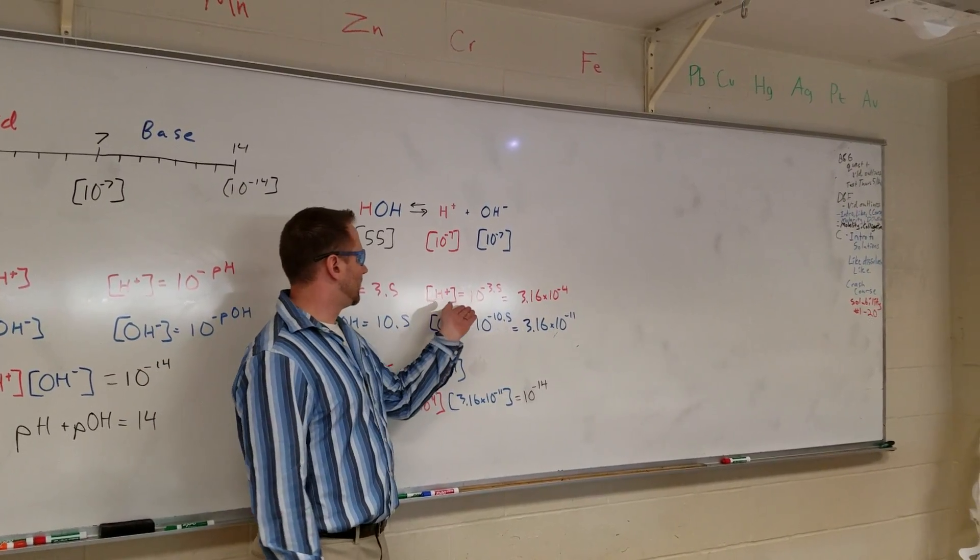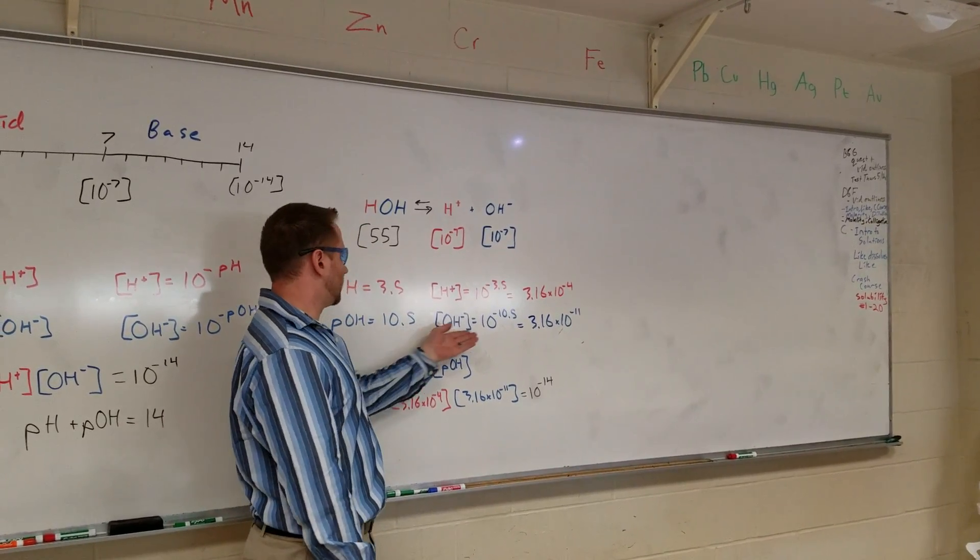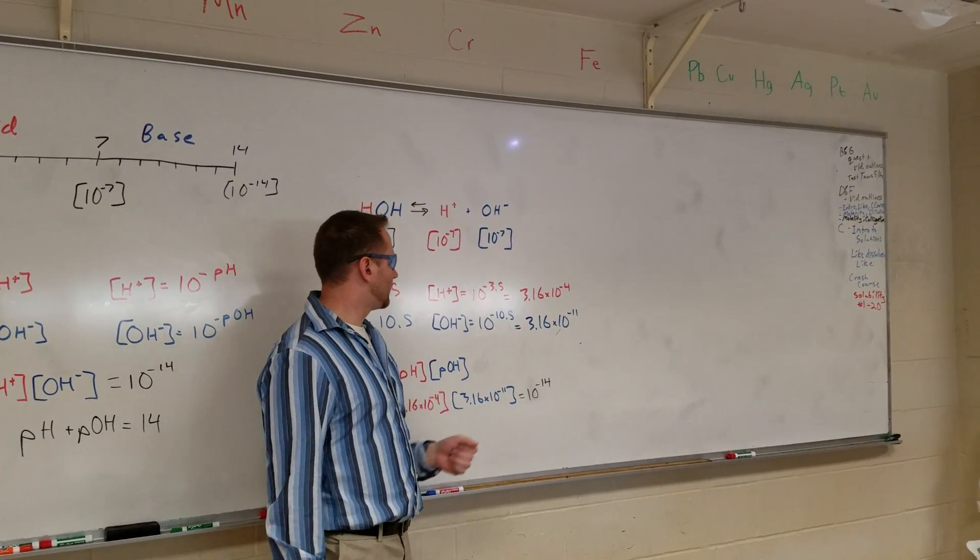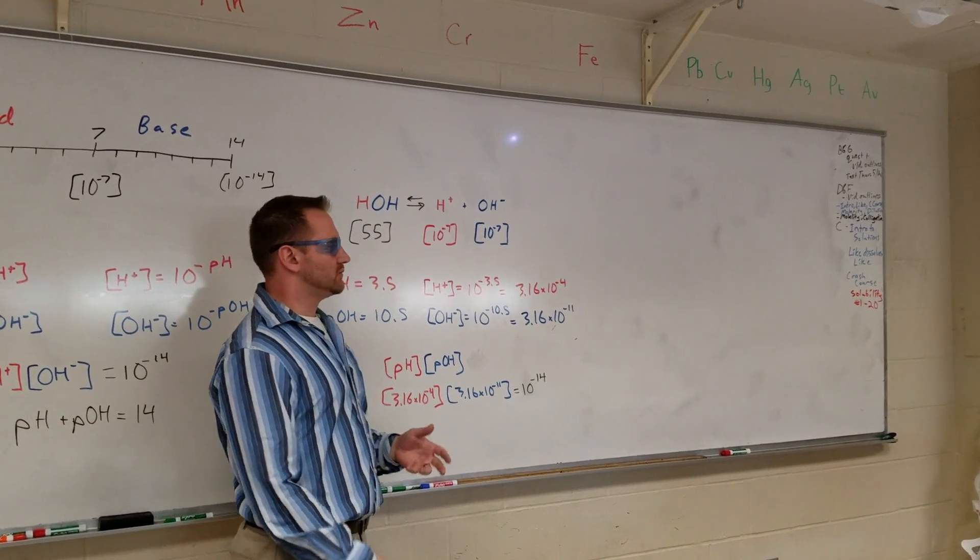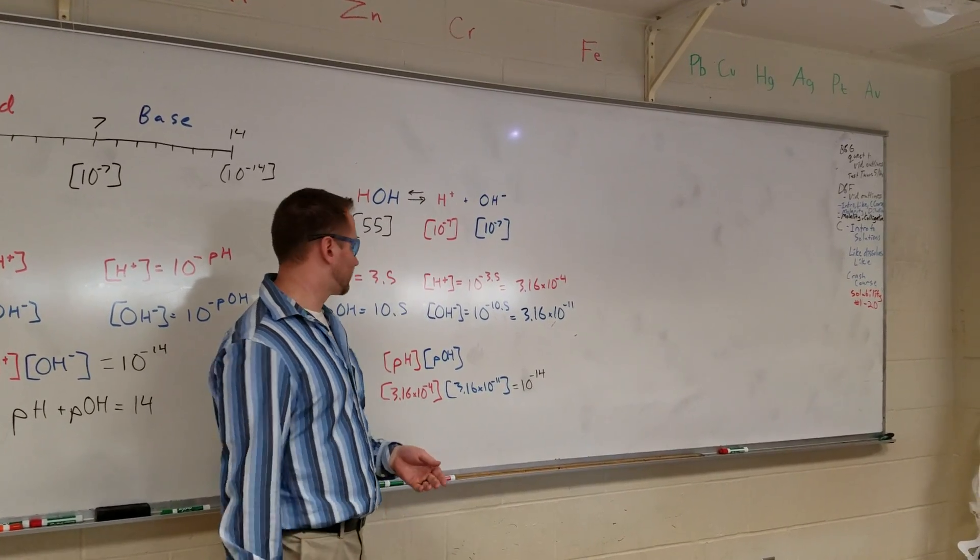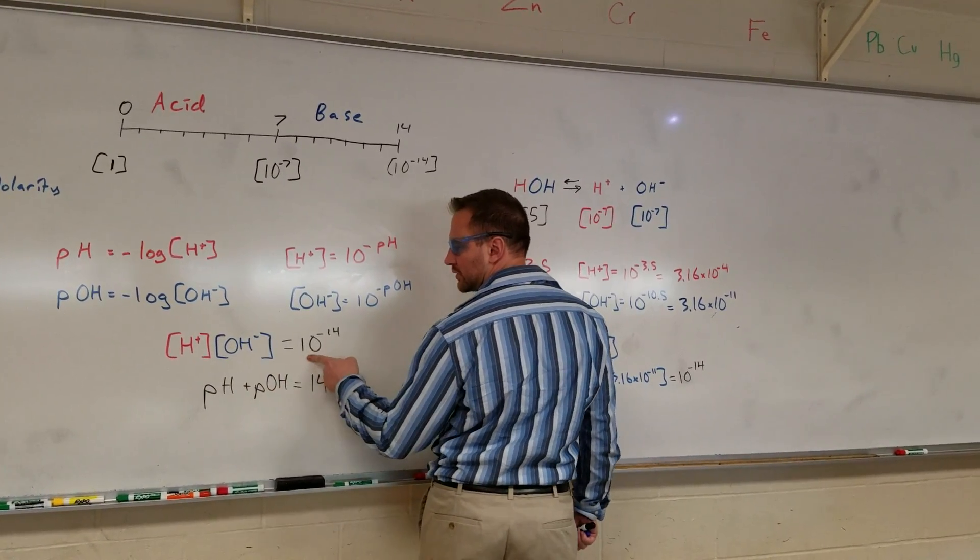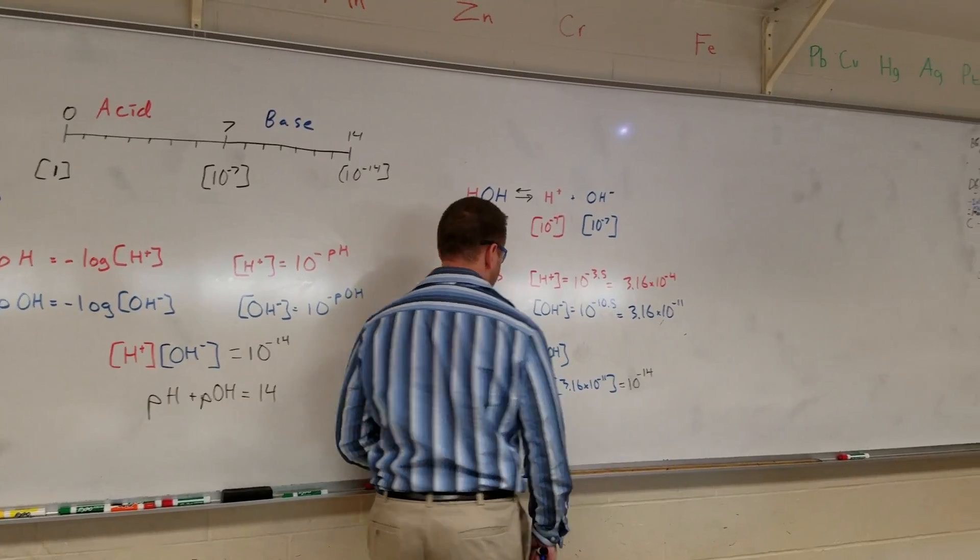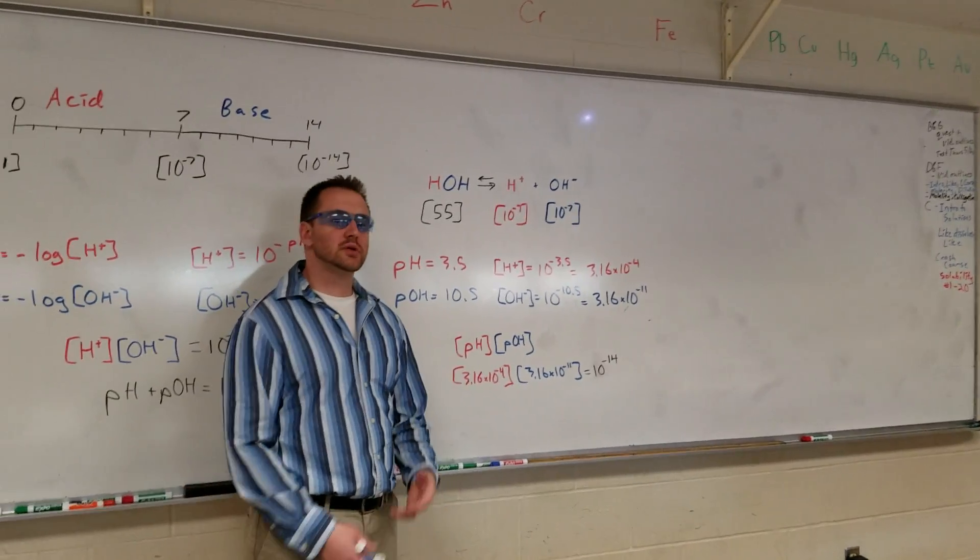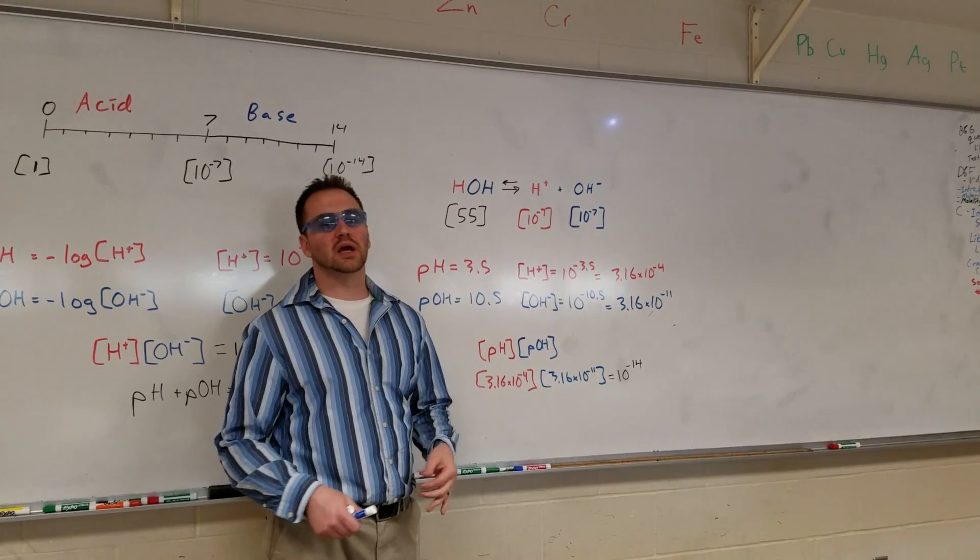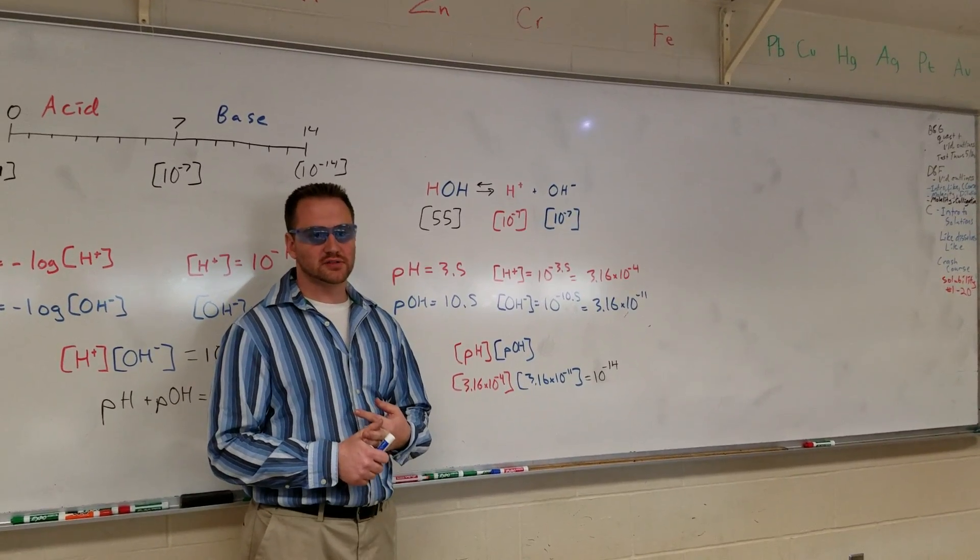When we plug that into our calculator, we get a hydrogen ion concentration of 3.16 times 10 to the negative 4. And, not coincidentally, we get a hydroxide concentration of 3.16 times 10 to the negative 11. To check ourselves, we know that when you multiply the hydrogen ion concentration times the hydroxide ion concentration, it should equal 10 to the negative 14. And when we plug that in, we get 10 to the negative 14. So knowing the pH, you can calculate the pOH, you can calculate the hydrogen ion concentration, and you can calculate the hydroxide ion concentration.